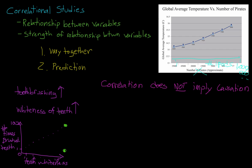Thinking about our first example of toothbrushing and whiteness of teeth, you might be tempted to conclude that brushing your teeth more will give you whiter teeth. But that's not what this graph actually says. It could be that those with naturally whiter teeth tend to brush more often. Or maybe it's driven by a third variable, like wealth or socioeconomic status. Wealthier families might have more money to spend on dental care. Remember, correlation does not imply causation.